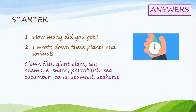Welcome back. How many did you get in your one minute timed activity? Here are the plants and animals I wrote down: clownfish, giant clam, sea anemone, shark, parrotfish, sea cucumber, coral, seaweed, and seahorse. Compare your answers with what I've written on the screen. You can add some of my answers to your own list if you would like to do that.